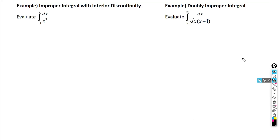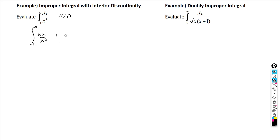Example three: an improper integral with an interior discontinuity. The integrand is 1/x³ from −1 to 2. Plugging in −1 or 2 is fine, but x = 0 is not in the domain — it gives a vertical asymptote. We split the integral into two parts: from −1 to 0 plus from 0 to 2 of dx/x³.